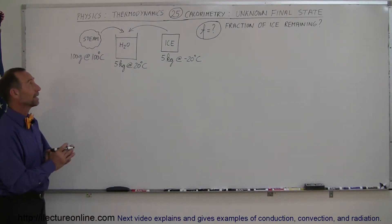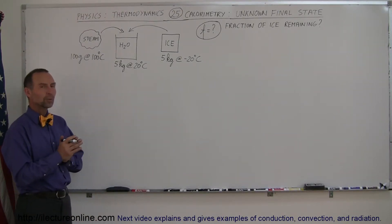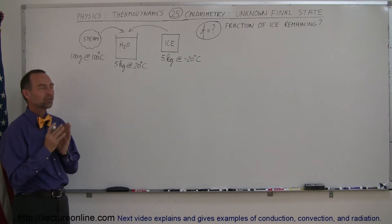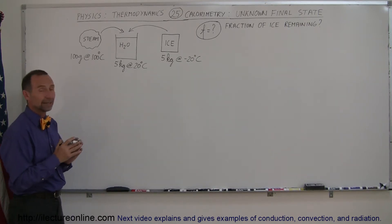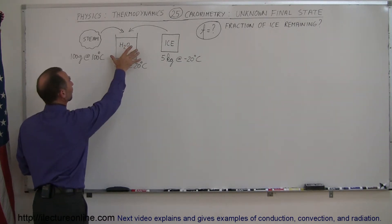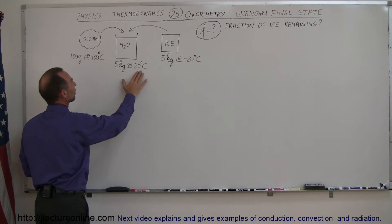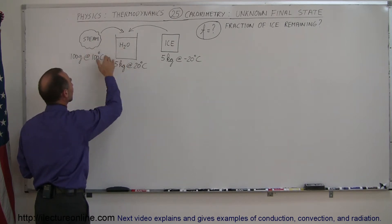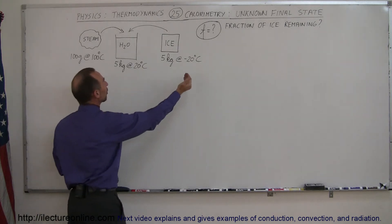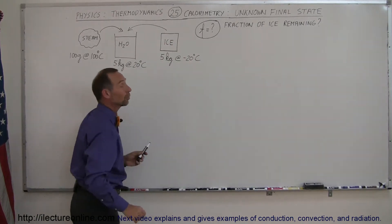Welcome to our lecture online. Here is a very interesting calorimetry problem — one in which we do not know the final state. The problem starts with a bucket of water, 5 liters, which is equal to 5 kilograms of water at 20 degrees centigrade. We put into that bucket 100 grams of steam at 100 degrees centigrade and also a block of ice — 5 kilograms of ice at minus 20 degrees centigrade.